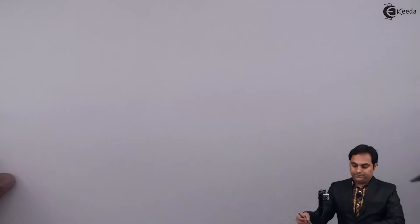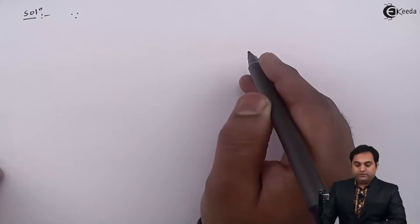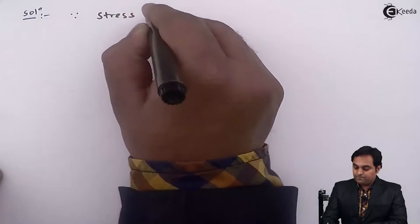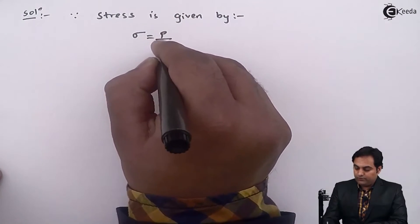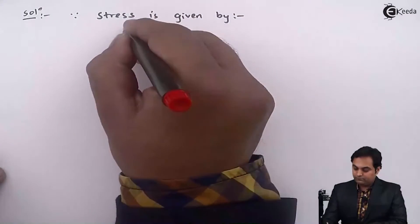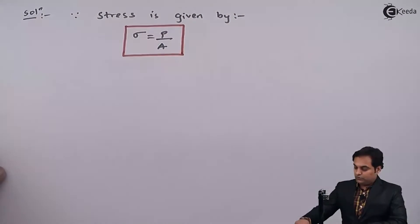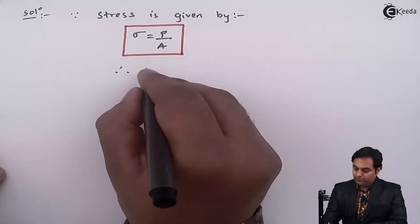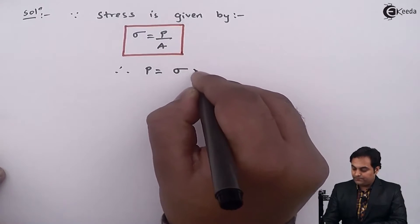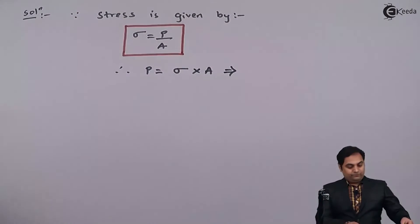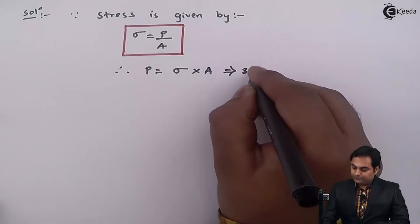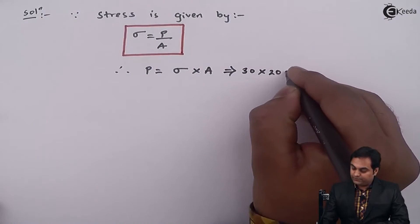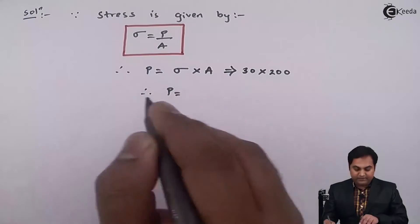Going into the solution: since stress is given by sigma = load divided by area, therefore load P becomes stress multiplied by area. Stress is given as 30 Newton per mm² and area is given as 200 mm², so from this we will get the value of P.